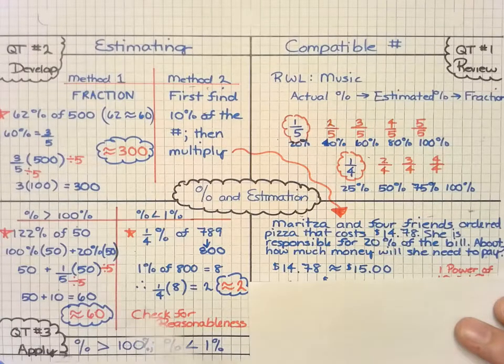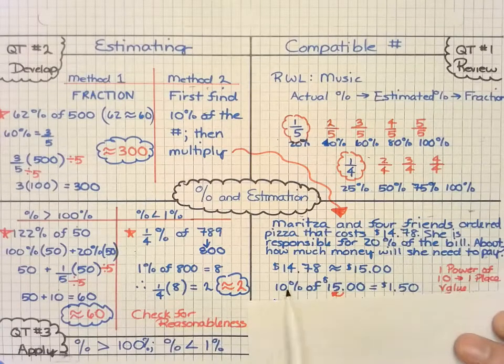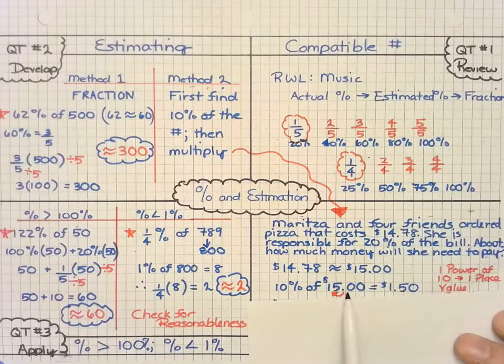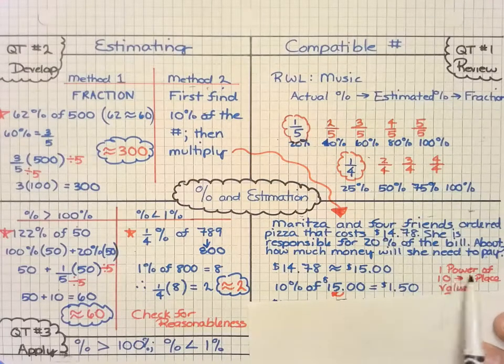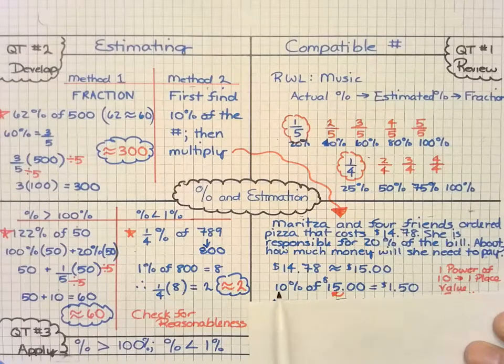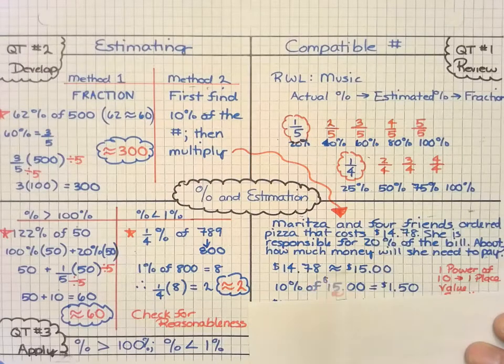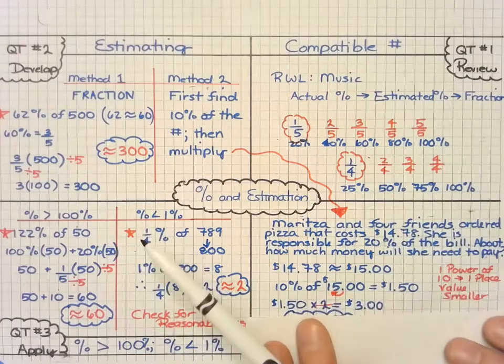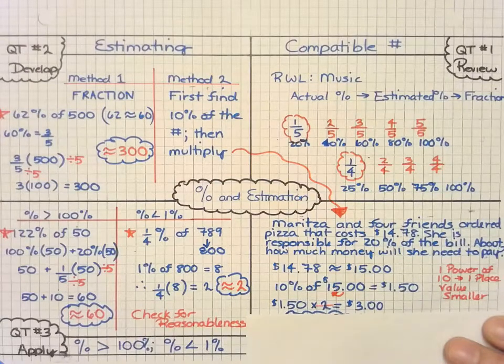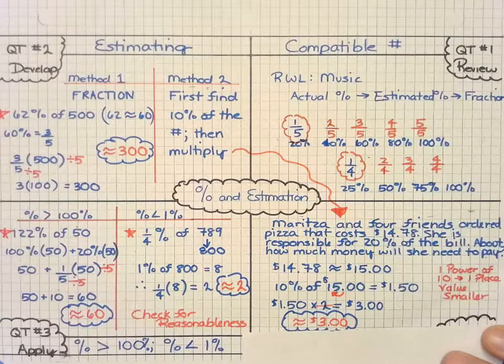And I happen to know that 20% can easily go into $15. But say I didn't know that. I can just take 10% of the $15, which means I just move it over one place value because it's 1 power of 10, and I get $1.50. But remember, 10% is only half of 20%. So how do I get from 10% to 20%? I multiply by 2. And so I can take my answer of 150 and multiply by 2. And I get $3. And so therefore, Maritza's part of the bill is approximately $3.